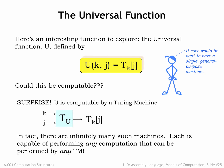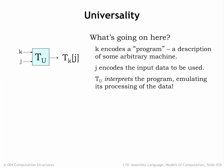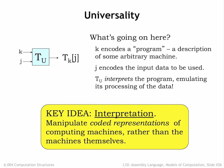Surprise! u is computable and T_u exists. In fact, there are infinitely many universal Turing machines, some quite simple. The smallest known universal Turing machine has four states and uses six tape symbols. A universal machine is capable of performing any computation that can be performed by any Turing machine. k encodes a program — a description of some arbitrary Turing machine that performs a particular computation. j encodes the input data on which to perform that computation. T_u interprets the program, emulating the steps T_k will take to process the input and write out the answer.